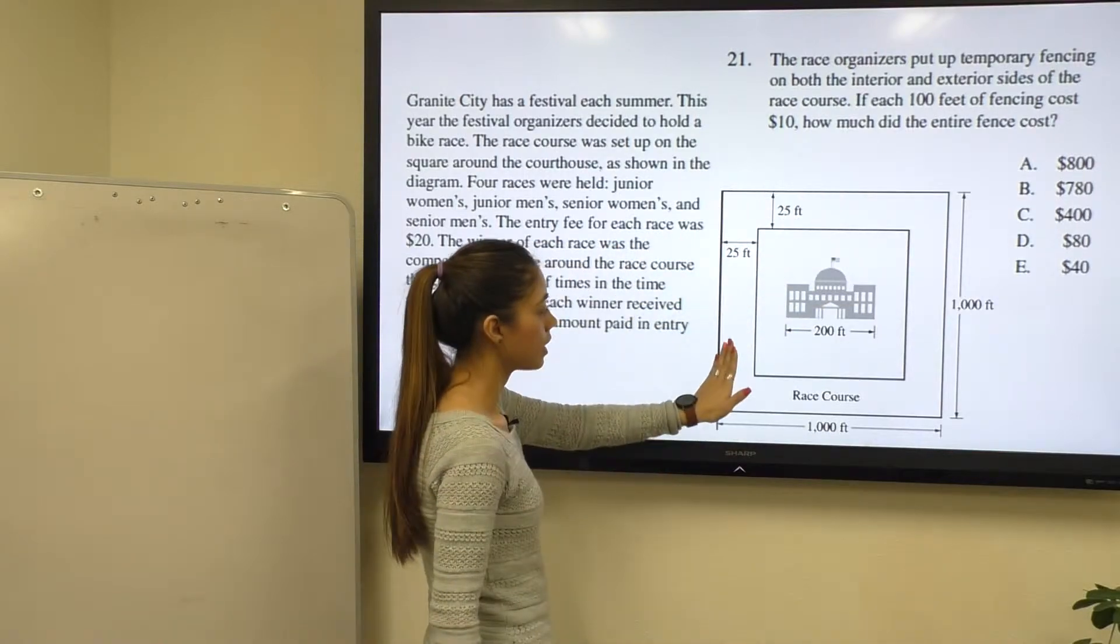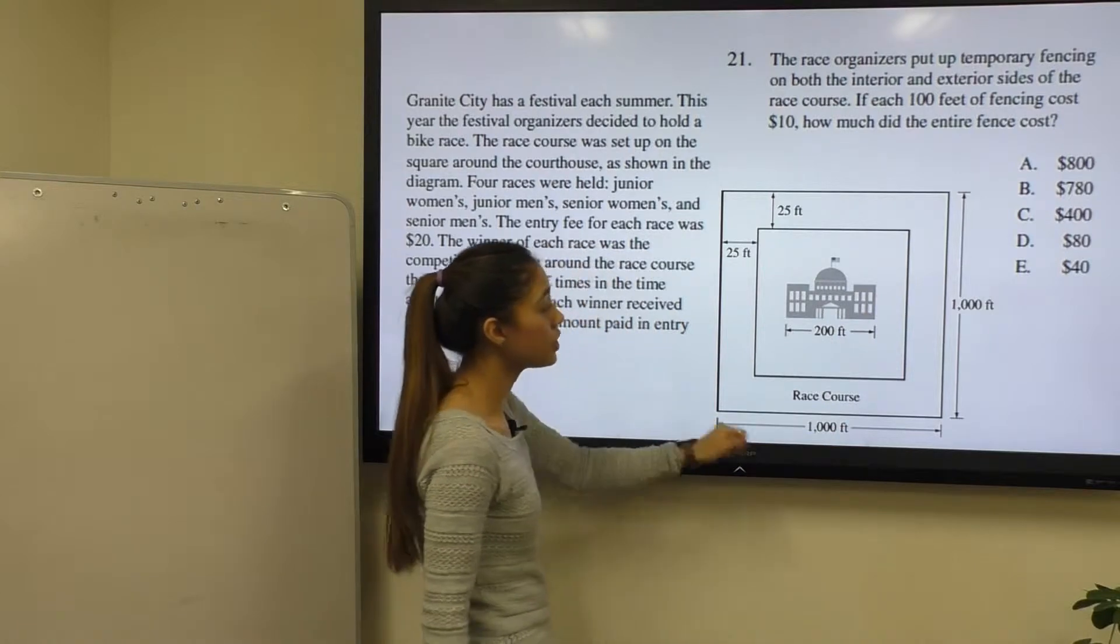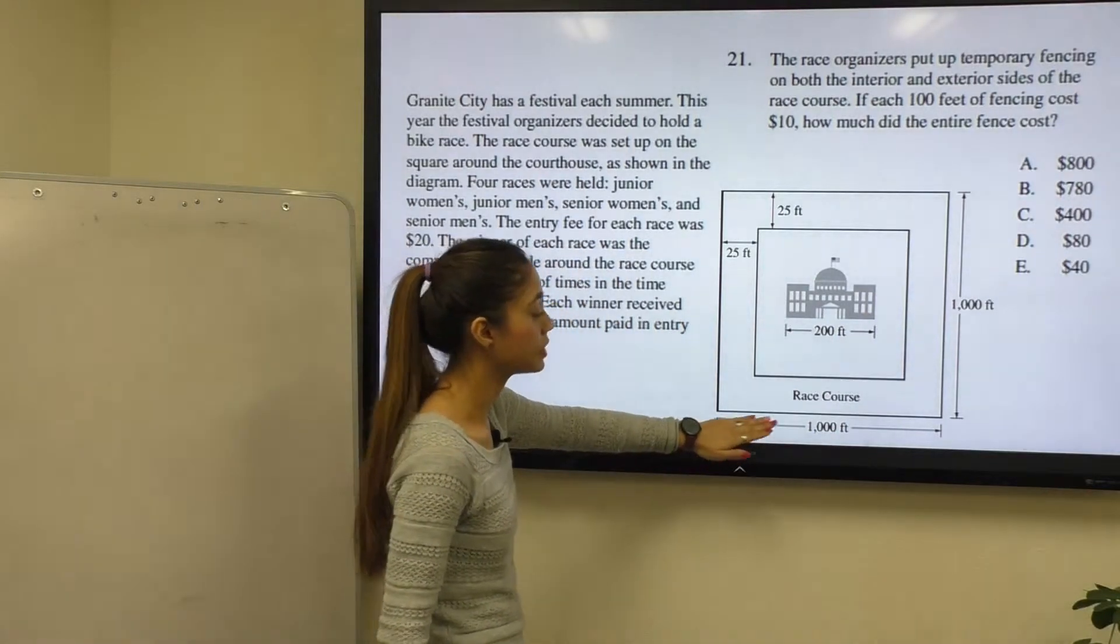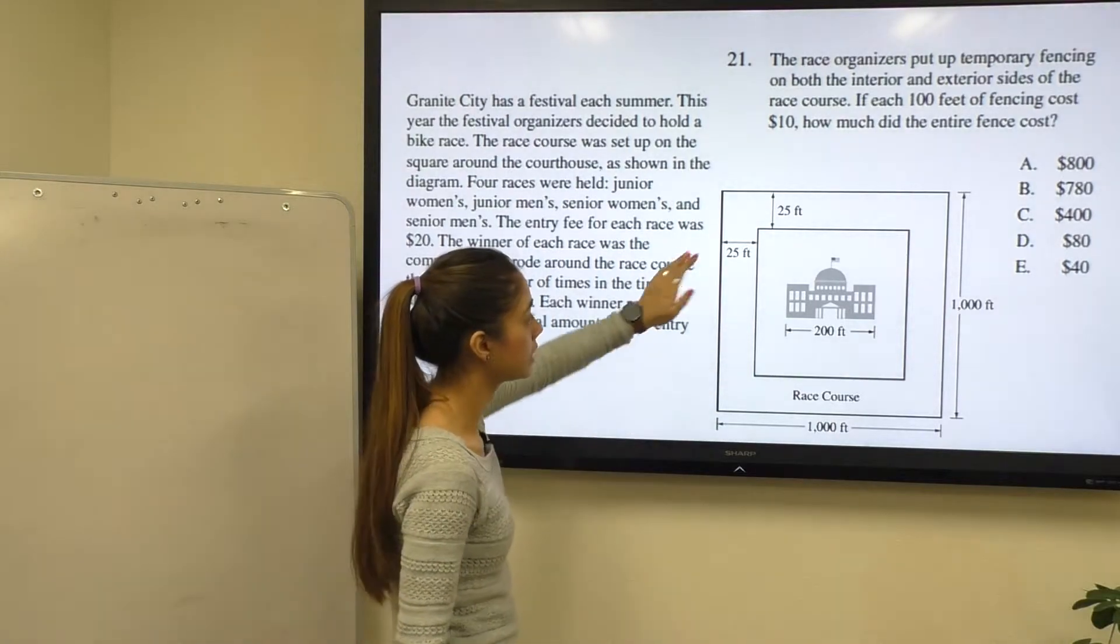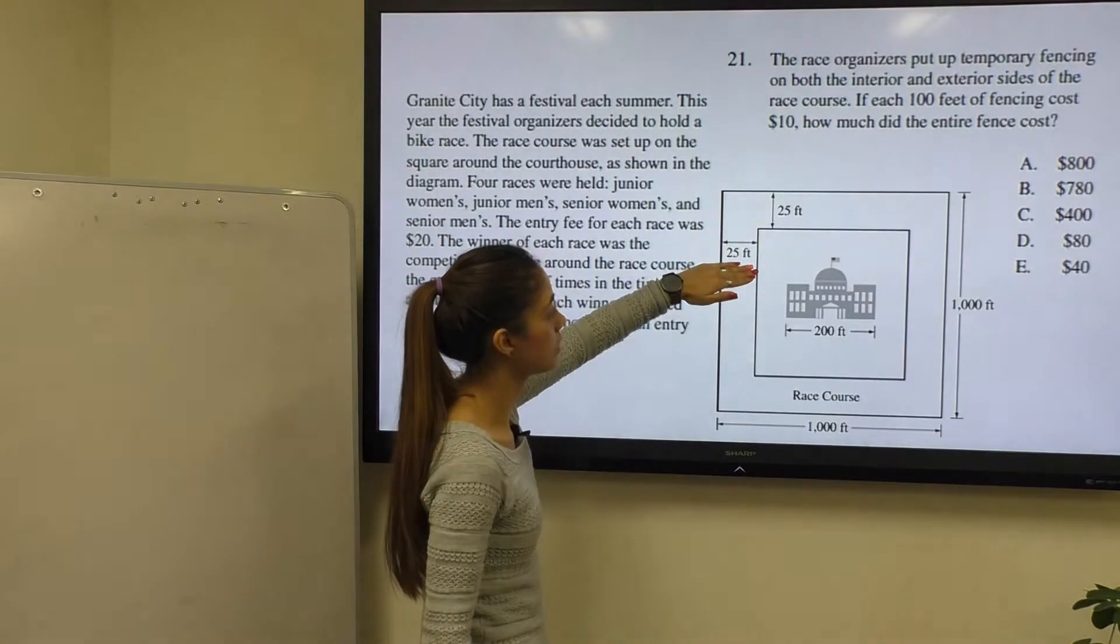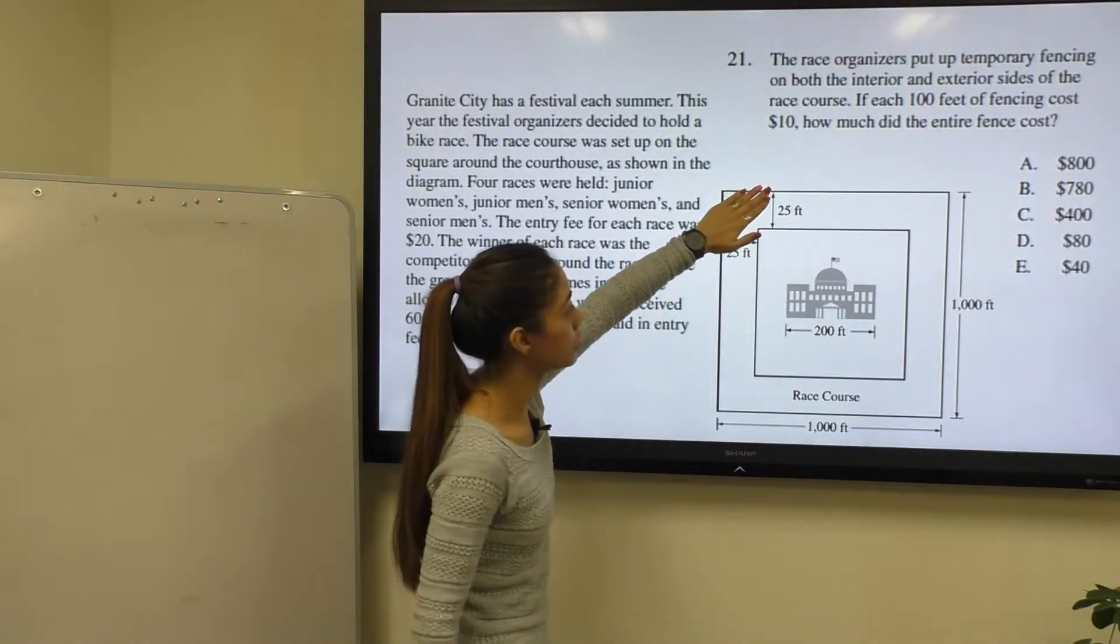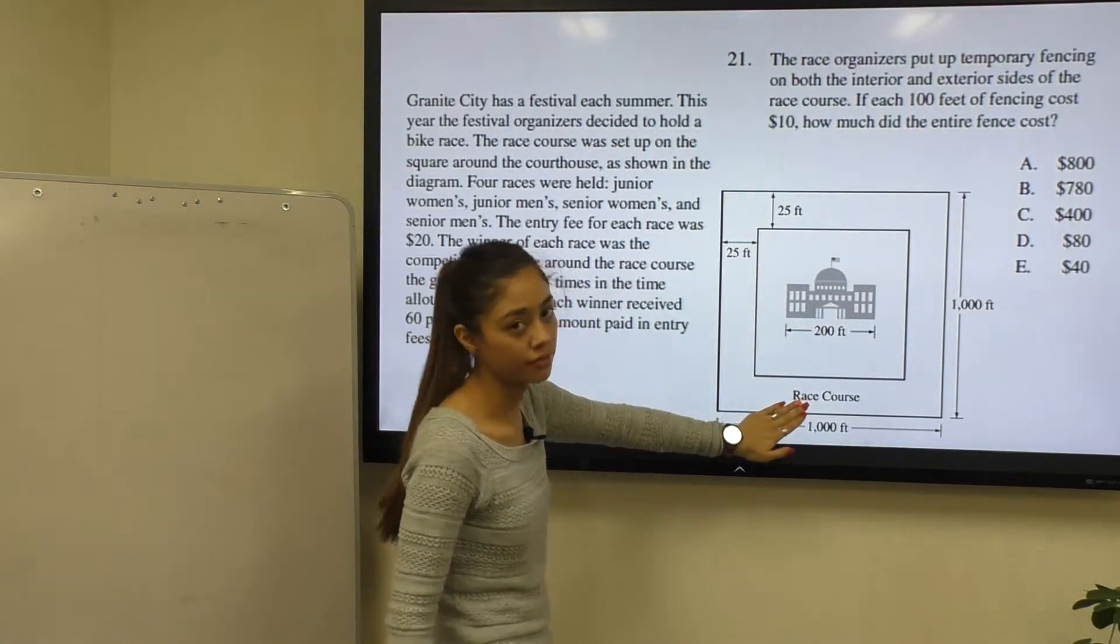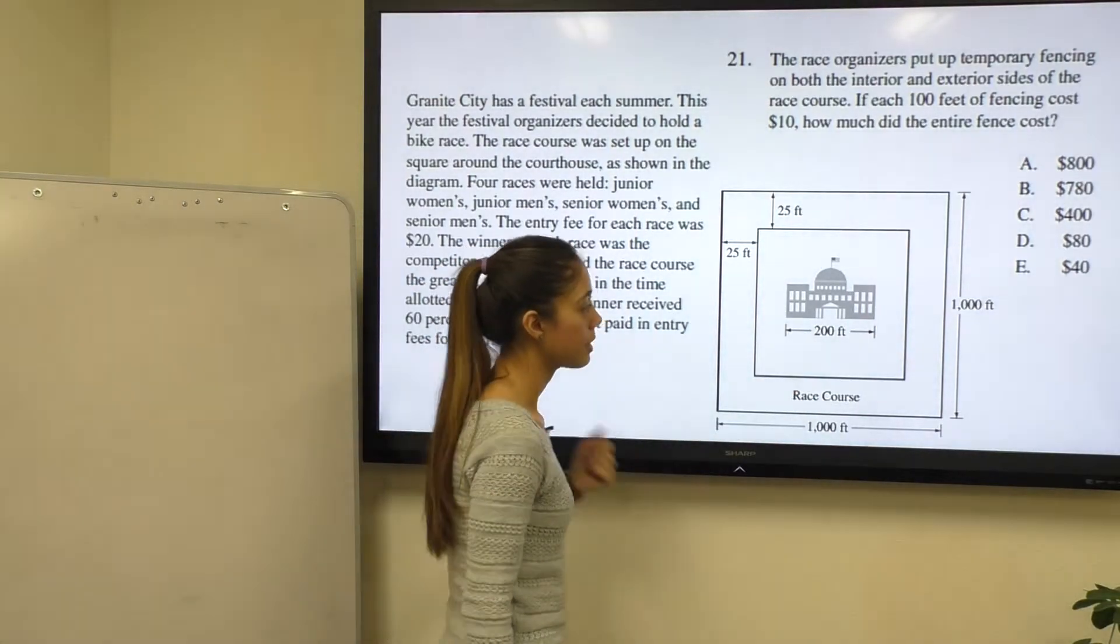So we know the measurements for our large square which is 1000. However, for the small square they don't give us the measurements, but they tell us that it is being shortened by 25 feet on the left and 25 feet on the right, and that it is being shortened 25 feet on top and 25 feet on bottom. Therefore it's shortened 50 feet on both sides.